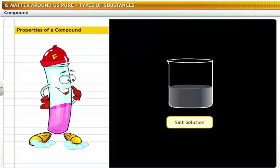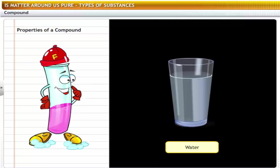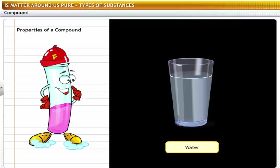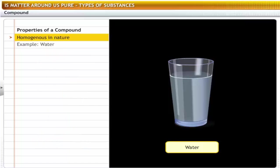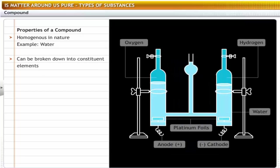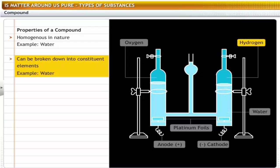Compounds have similar properties like that of elements. Compounds are composed of two or more elements which are chemically bound with one another in fixed proportions. A pure chemical compound is homogeneous in nature, made up of the same type of molecules — for example, water contains only molecules of water. A compound can be broken into its constituents — for example, water can be broken into constituent elements hydrogen and oxygen by the process of electrolysis.